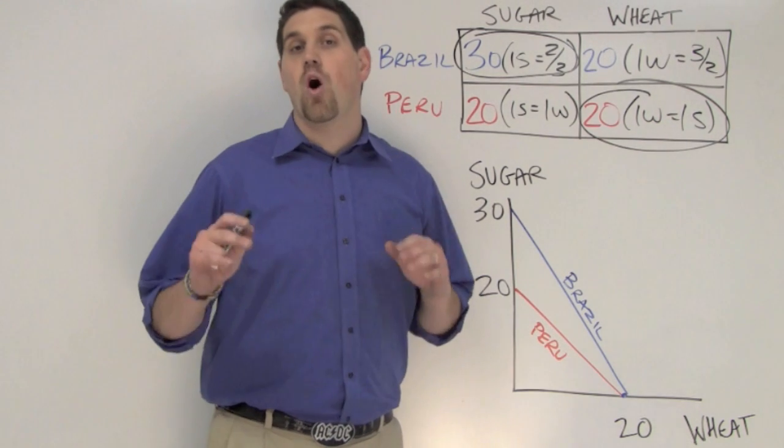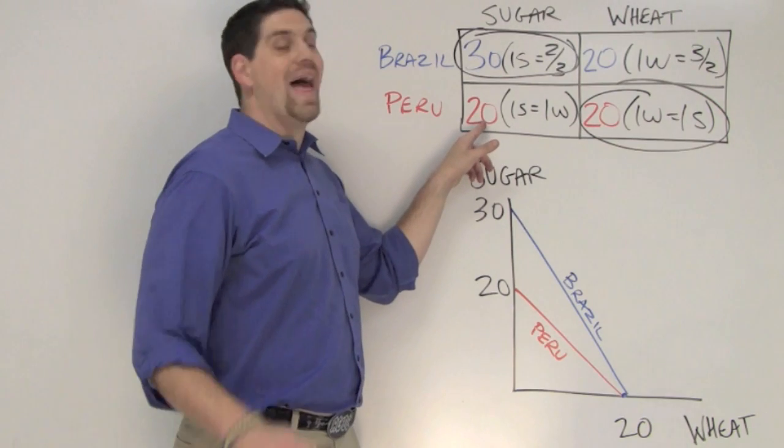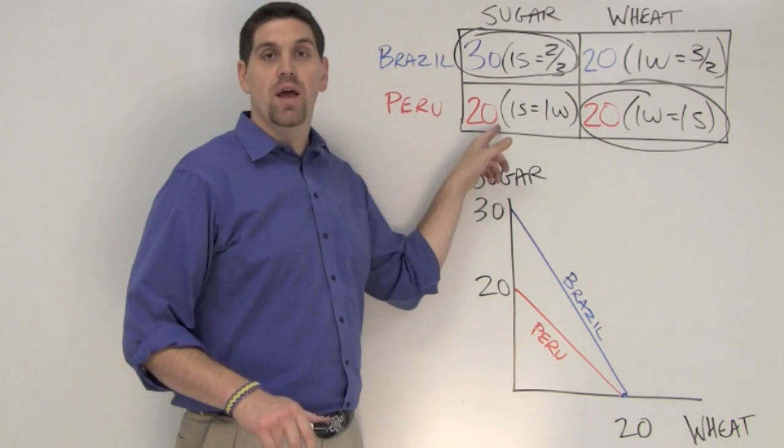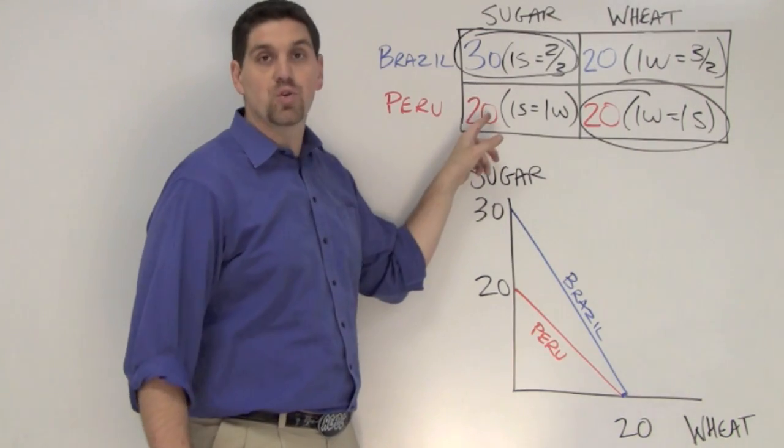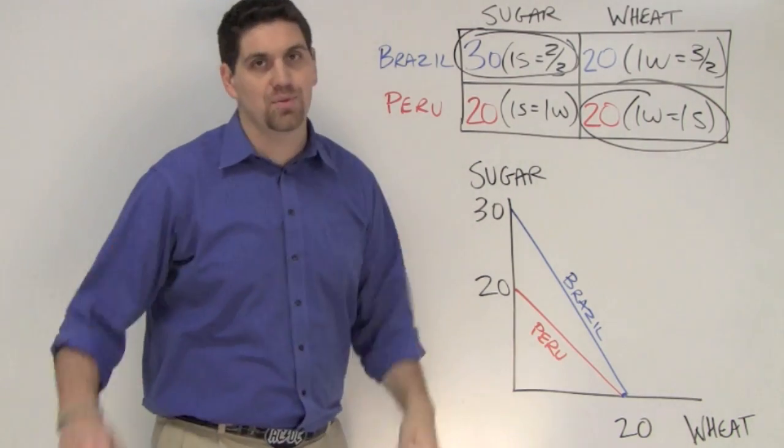Now let's look at some of the wrong answers. Peru does not have an absolute advantage in the production of sugar. An absolute advantage is the one that can produce more. So Brazil can produce 30 sugar, and Peru can only produce 20. And so Peru does not have an absolute advantage.